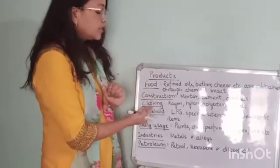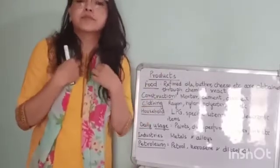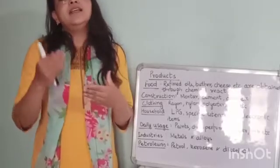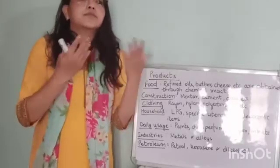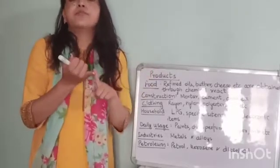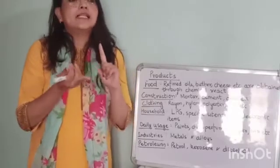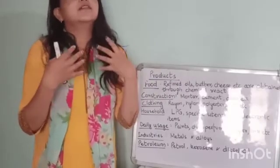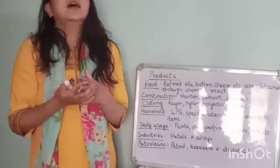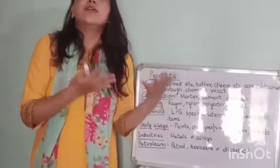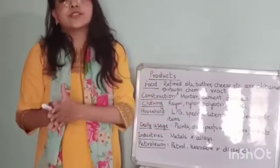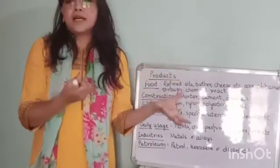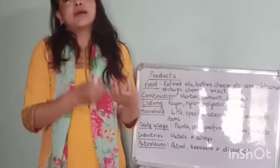Whatever clothes we wear also go through many chemical processes. Polyester, rayon, and nylon are artificial fibers that go through chemical reactions. Silk is a natural fiber but it also goes through chemical processes.